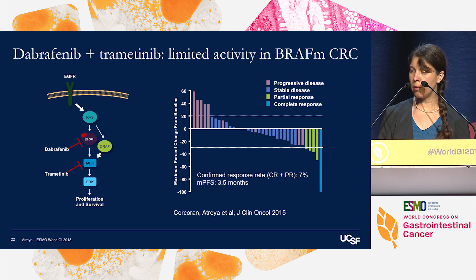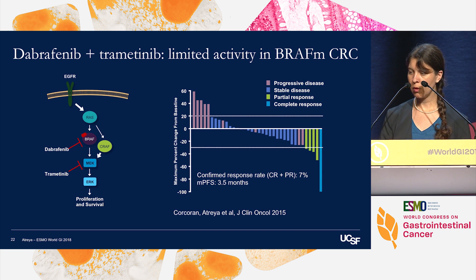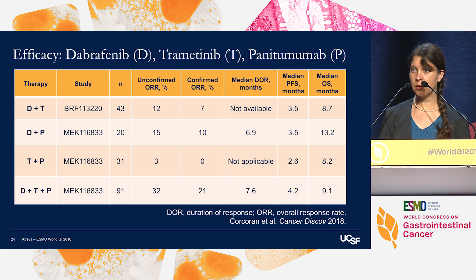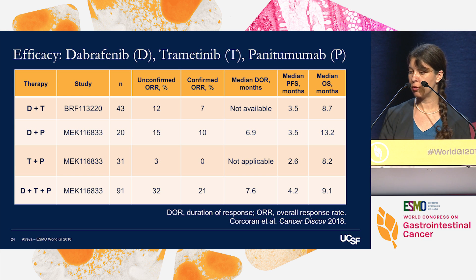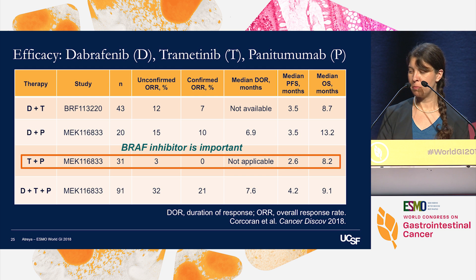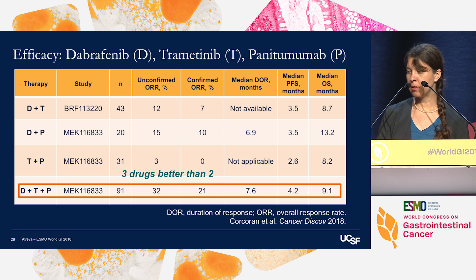This led to a combination trial with the BRAF inhibitor dabrafenib and the MEK inhibitor trametinib, with a modest improvement in response rates. Preclinical data also suggested that targeting EGFR may be required to overcome resistance to BRAF and MEK inhibitor combinations. This led to a series of studies looking at different combinations of dabrafenib, trametinib, and the EGFR-targeted antibody panitumumab, from which we conclude that a BRAF inhibitor is important — the worst outcomes and increased skin toxicity were seen with the combination of trametinib and panitumumab. Three drugs may be better than two, as response rates and progression-free survival were improved with the triplet combination.